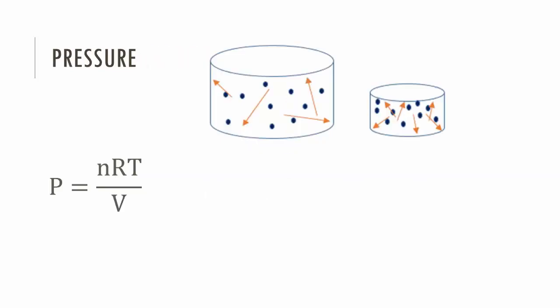If we want to look only at pressure, we can manipulate the formula like this. We can see that pressure is proportional to the number of moles and the temperature, but inversely proportional to the volume.